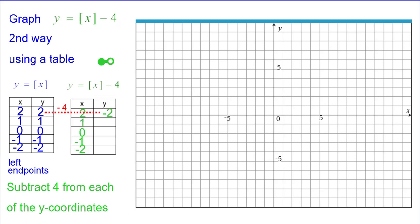So if you look at the first one, 2 minus 4 is -2, so we'll plot the point (2, -2) and make a step from there. 1 minus 4 is -3, so (1, -3) and make a step.